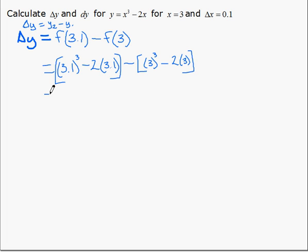And if we stick that all in a calculator, well we can do it in two parts: 23.791 minus 21, which gives us 2.791.